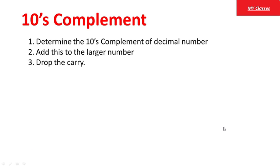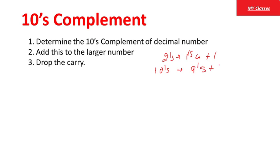Next is 10's Complement। 10's Complement कैसे find out करते हैं किसी भी number का? यह होता है decimal number का 10's complement — जब हम calculate करेंगे तो यह होता है 9's Complement plus 1। जैसे 2's complement calculate करते थे 1's complement plus 1 — same है। यहां 10's Complement = 9's Complement + 1।